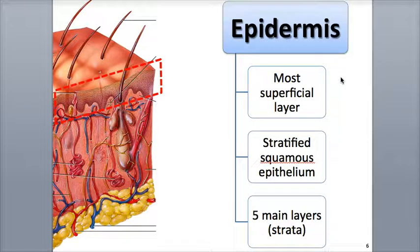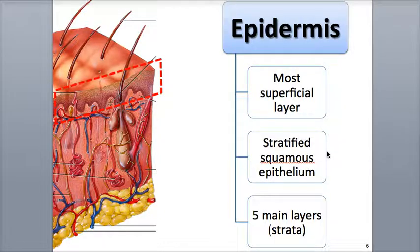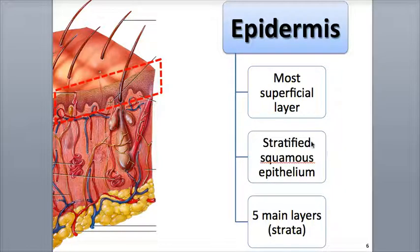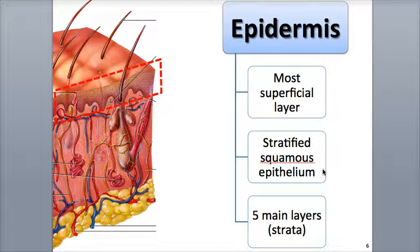The epidermis is the thinnest, most superficial region of the skin. It's made of layers of keratinized, stratified squamous epithelium. Keratinized means it's reinforced with concentrations of the tough protein keratin. Stratified means it consists of multiple layers. And squamous means that the epithelial cells have a very flat shape. There are five main layers, or strata, of the epidermis that we'll be reviewing in a little bit.